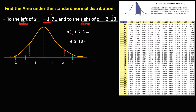For a negative Z, to find the area we just need to ignore the negative sign. So we find the area of 1.71. In the table, we have 1.7 and then 0.01, so that's 1.71. Then connect to find the area. Therefore, the area of 1.71 is 0.4564.